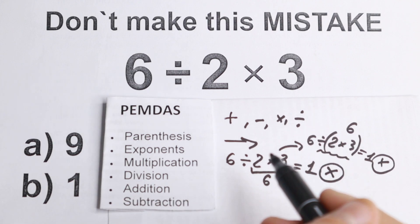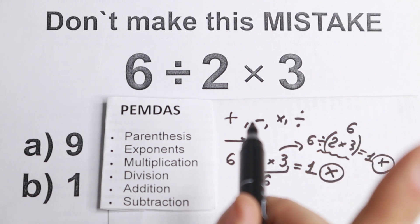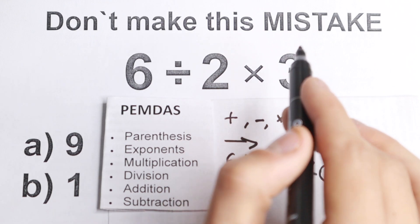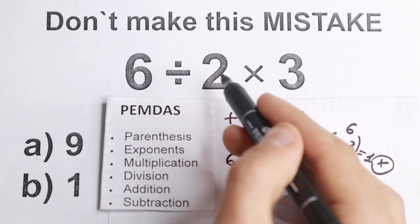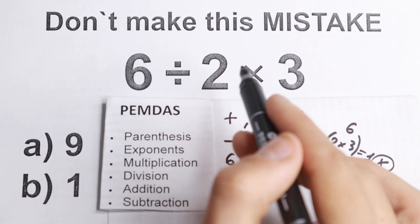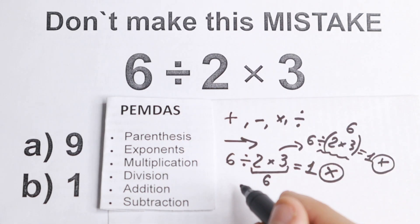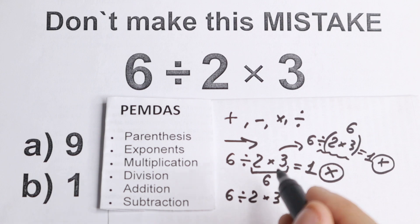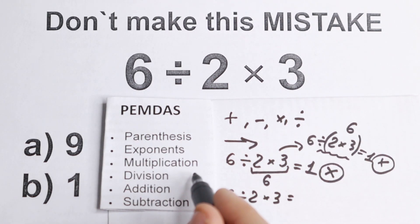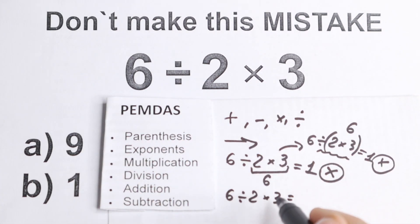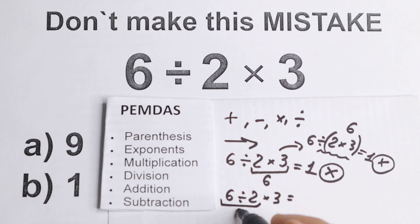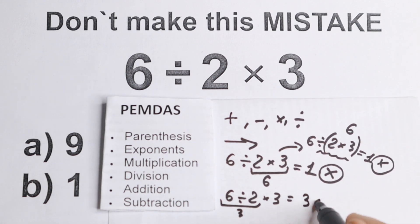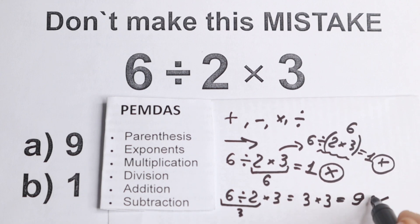Now let's solve it correctly. Multiplication and division are one group, and I'm scanning left to right. I have division before multiplication, so I do division first: 6 divided by 2 equals 3. Then the only thing left is 3 times 3, which equals 9. So 9 is the correct answer for this problem.